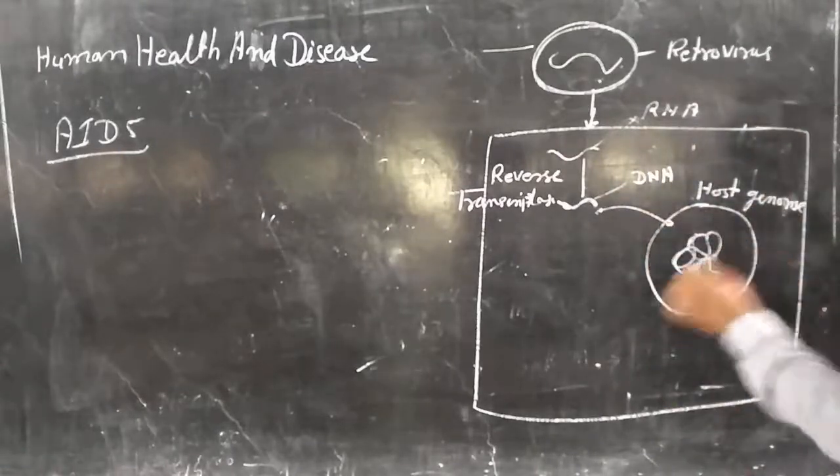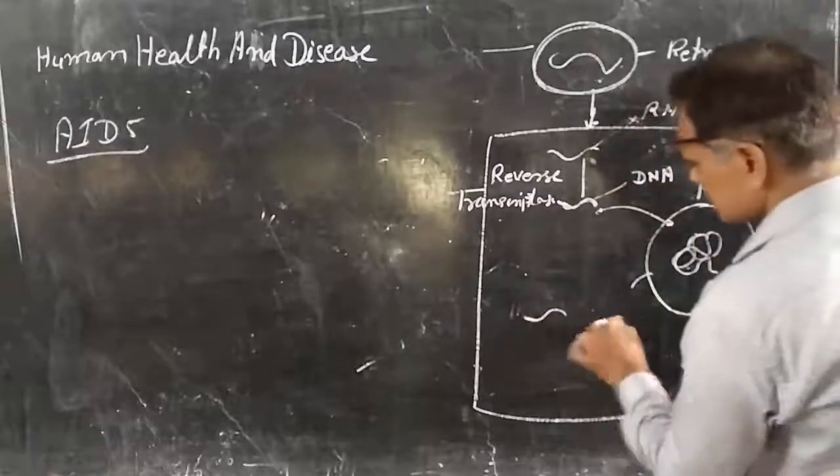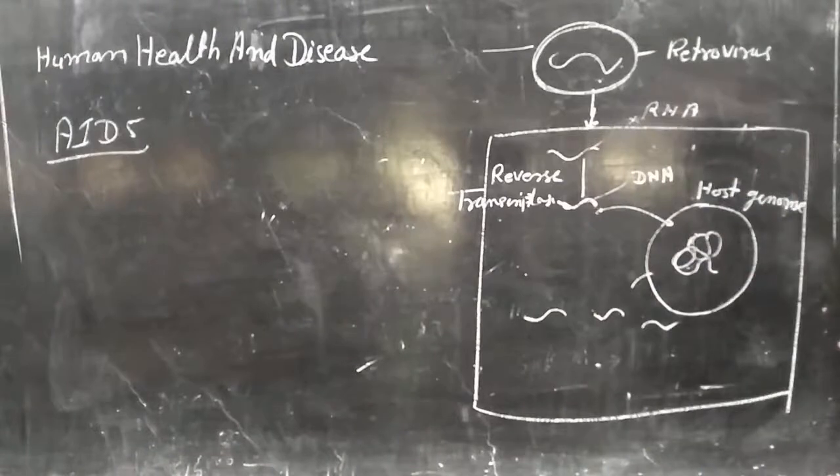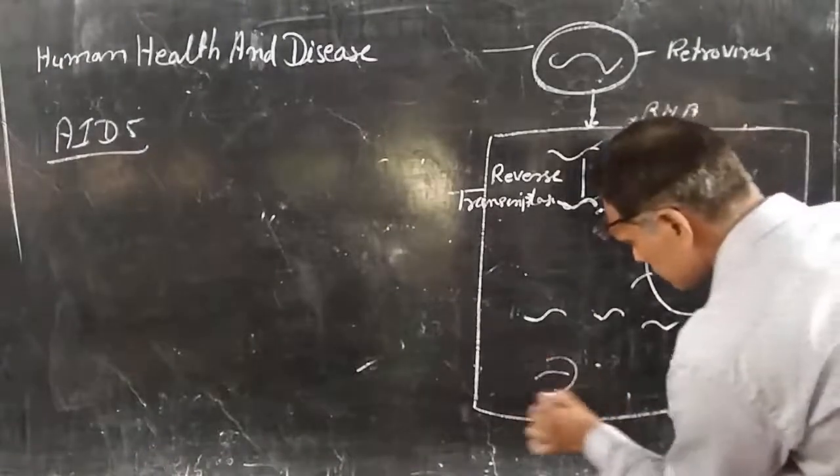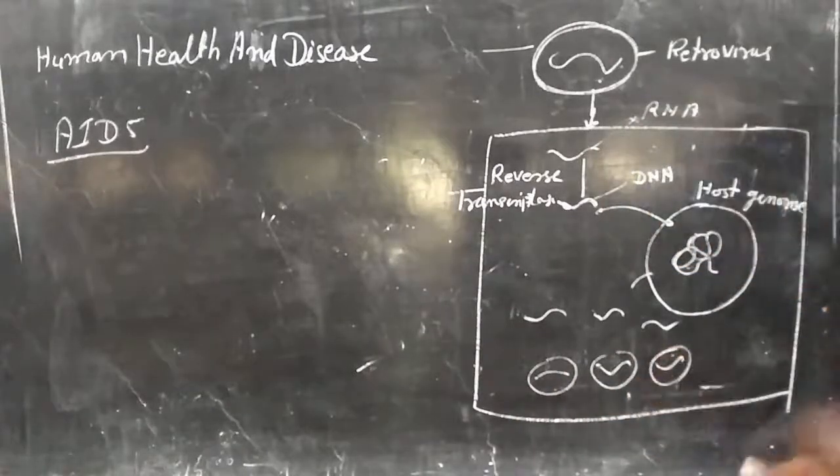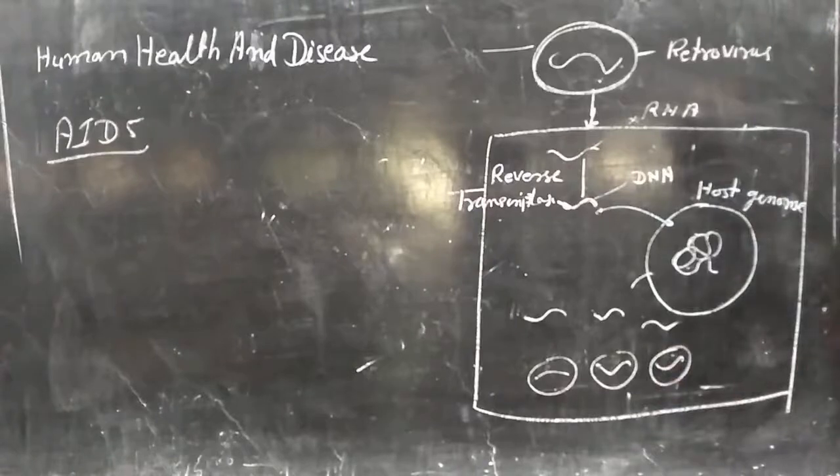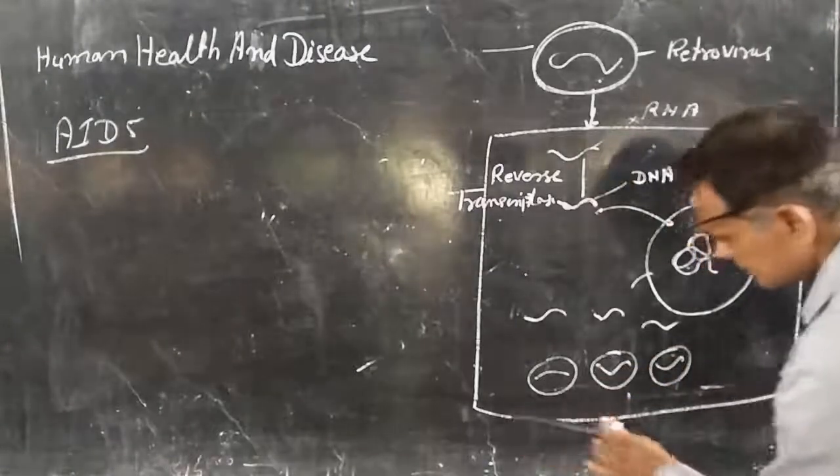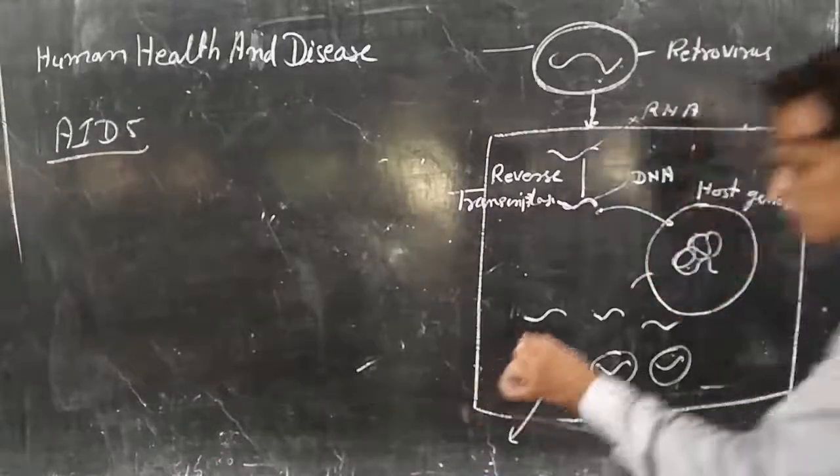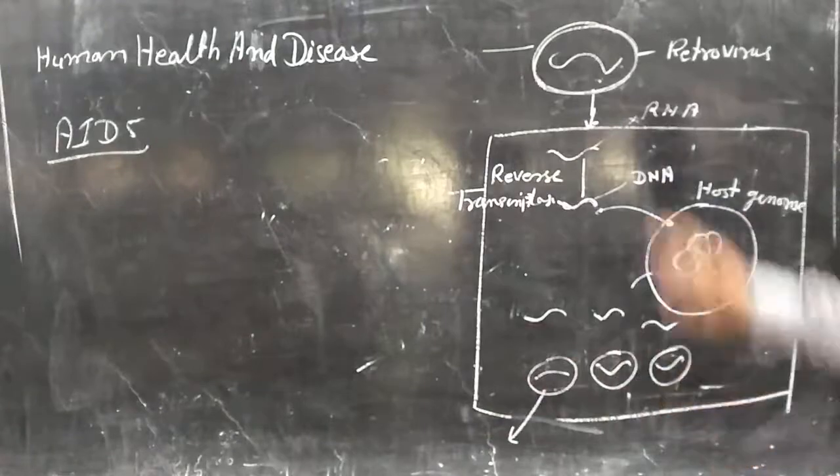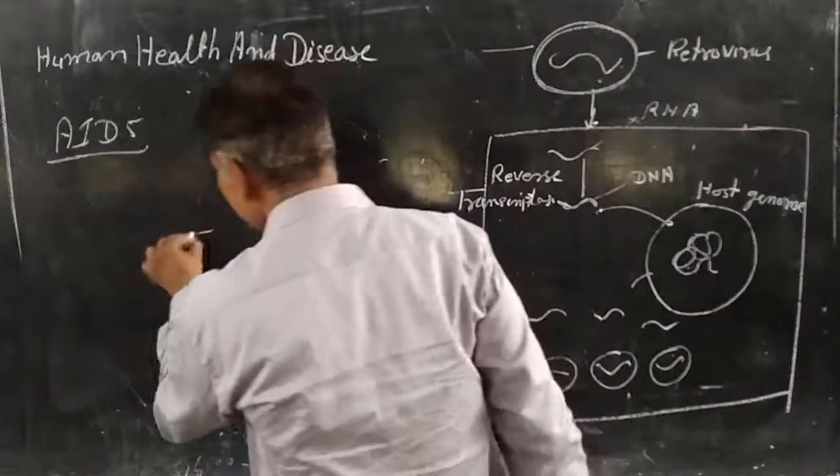Then it will guide the host cell according to the function which is based on the DNA of HIV virus. So it will form its copies - copies of HIV virus and the protein coat also. They will assemble inside the host cell and form new HIV virus.